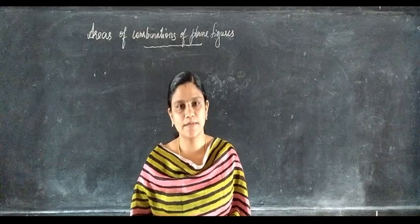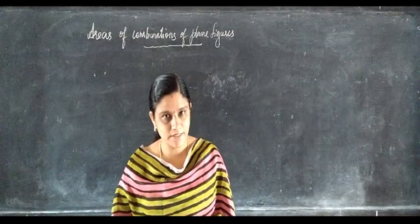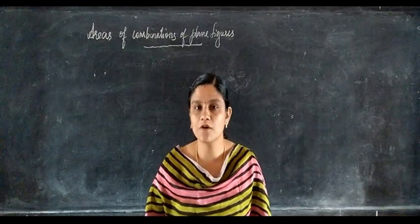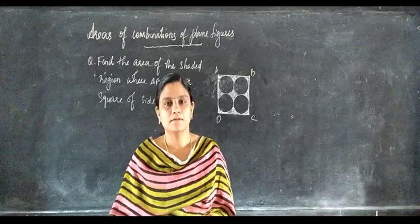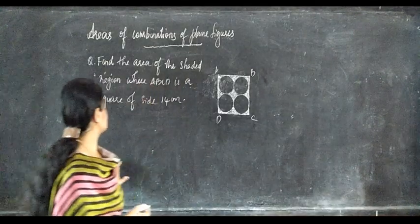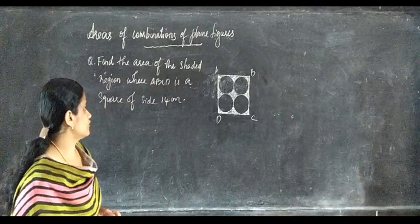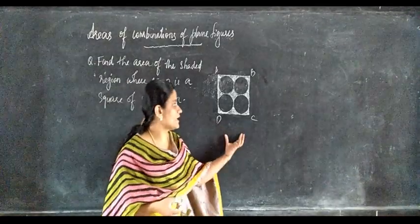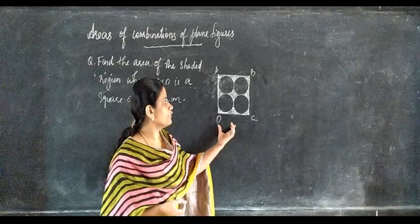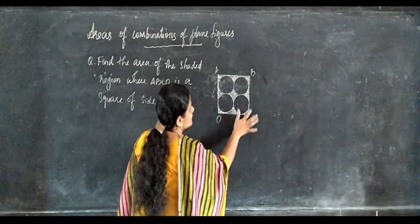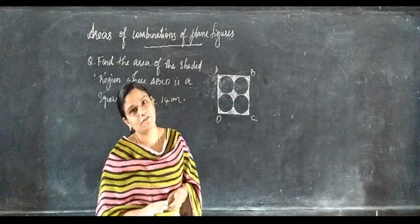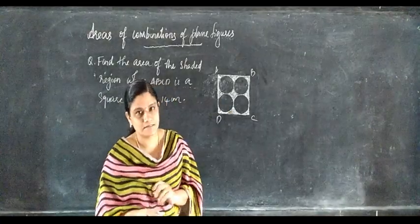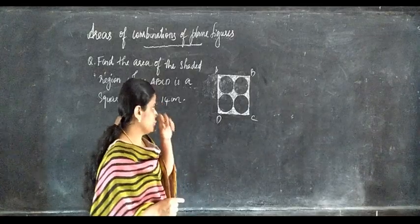So far we have calculated the areas of different figures. Now let us try to calculate the areas of some combinations of plane figures. The question is: find the area of the shaded region where ABCD is a square of 14 centimeters — it is a combination of a square and circles.